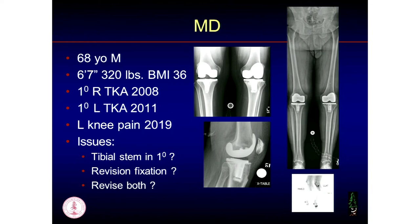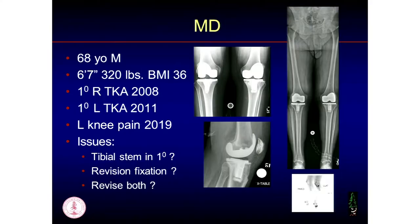So we make the diagnosis — the tibial is loose — and questions I had about this case: it's a big guy, BMI of 36, excellent bone quality. I did the right side three years earlier and it's doing fine. I made the decision in 2008 not to use a stem, but in 2019 I might. It's interesting that the right side with essentially the same size implants, same surgical technique, same radiographic outcome didn't get loose, but the left side did. Would you revise both components, or just the tibia?